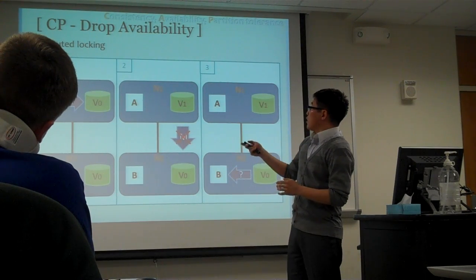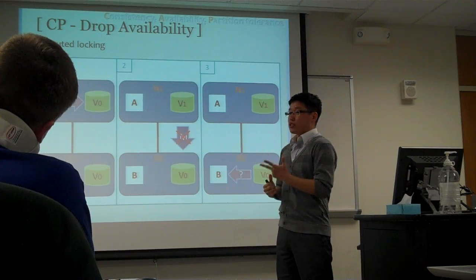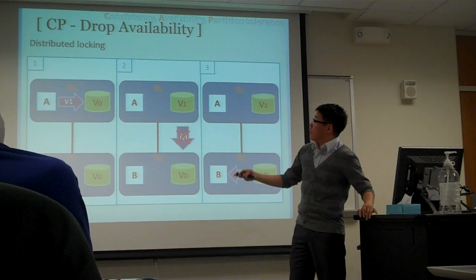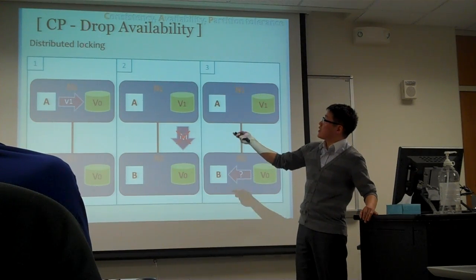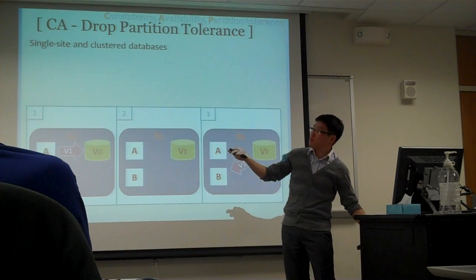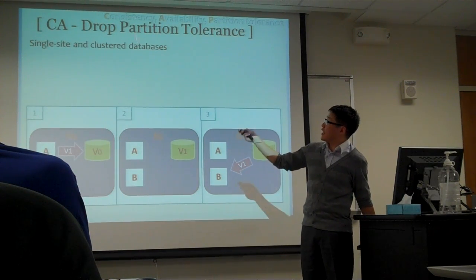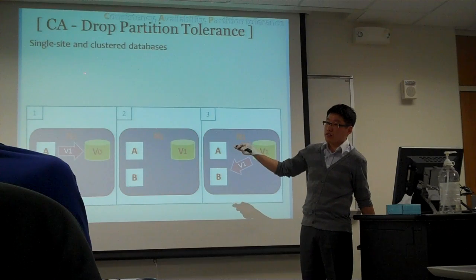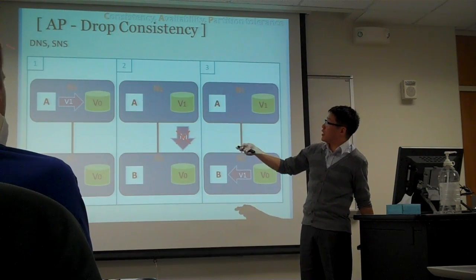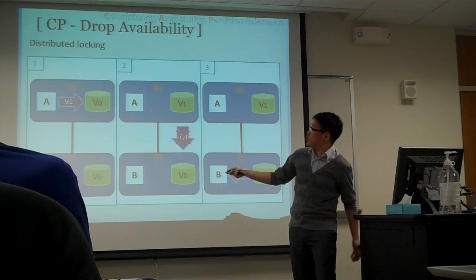According to the CAP theorem, a distributed system cannot have all three qualities at the same time. The two authors suggest three possible solutions: one is to guarantee consistency and partition tolerance; another is to guarantee consistency and availability; and the other is to guarantee availability and partition tolerance.